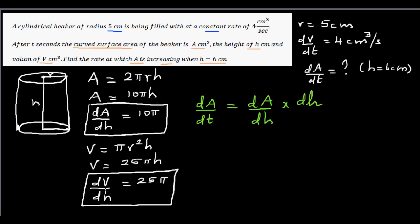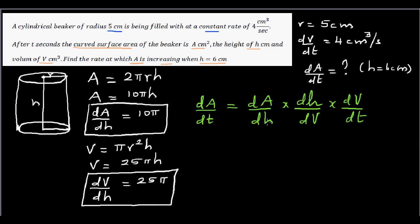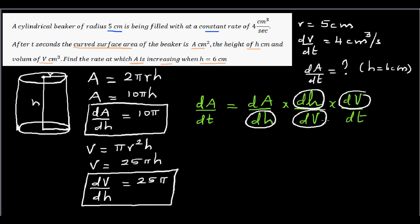I know dV/dH, so I can also write dH/dV. This way, dH and dH cancel. Then to cancel the dV, I write dV in the numerator, and to get dT I write dT in the denominator. So: dA/dt = dA/dH × dH/dV × dV/dt. The dH terms cancel and the dV terms cancel, leaving dA/dt.